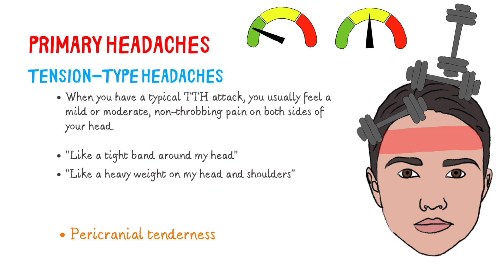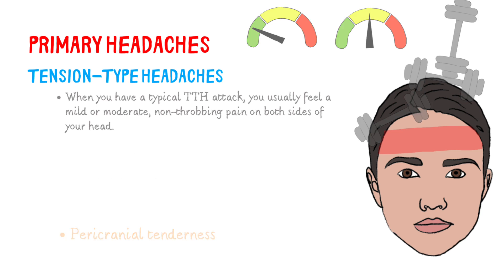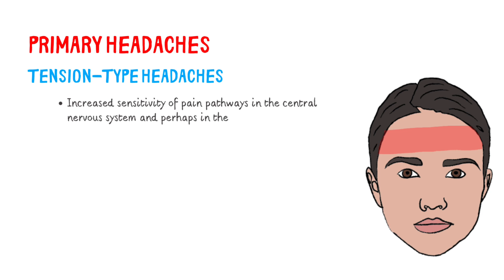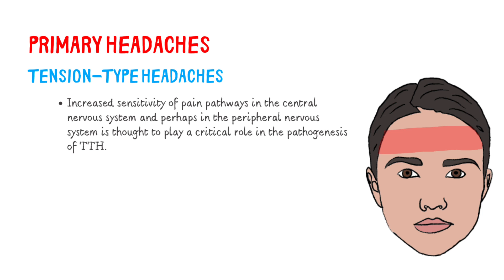Tenderness in the head, neck, and shoulders, typically exacerbated during headache, is the most important abnormal finding seen in patients with TTH. We do not know the exact pathogenesis of TTH — multiple factors are probably involved. Increased sensitivity of pain pathways in the central nervous system and perhaps in the peripheral nervous system is thought to play a critical role in the pathogenesis of TTH.